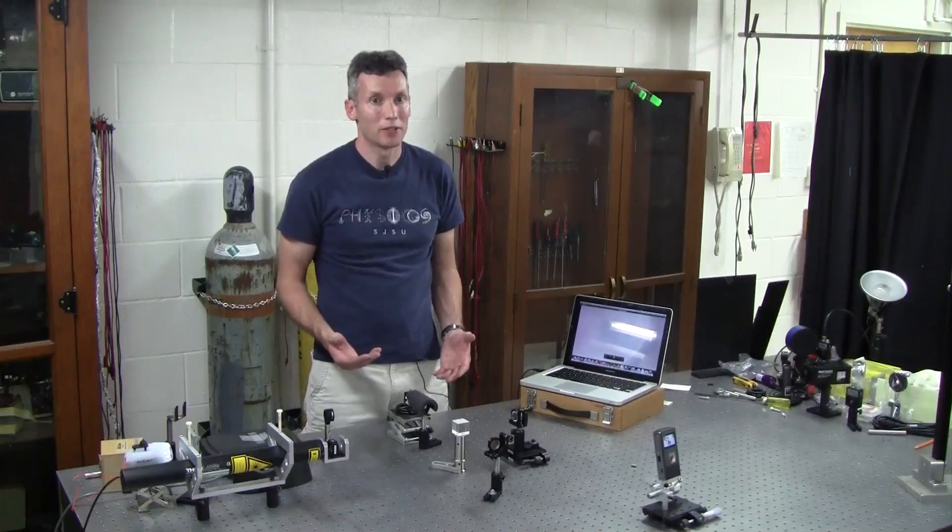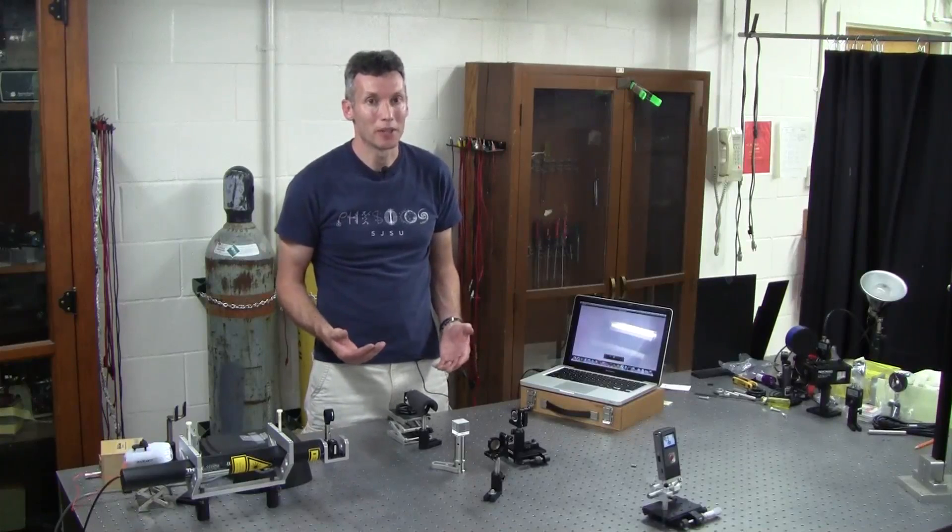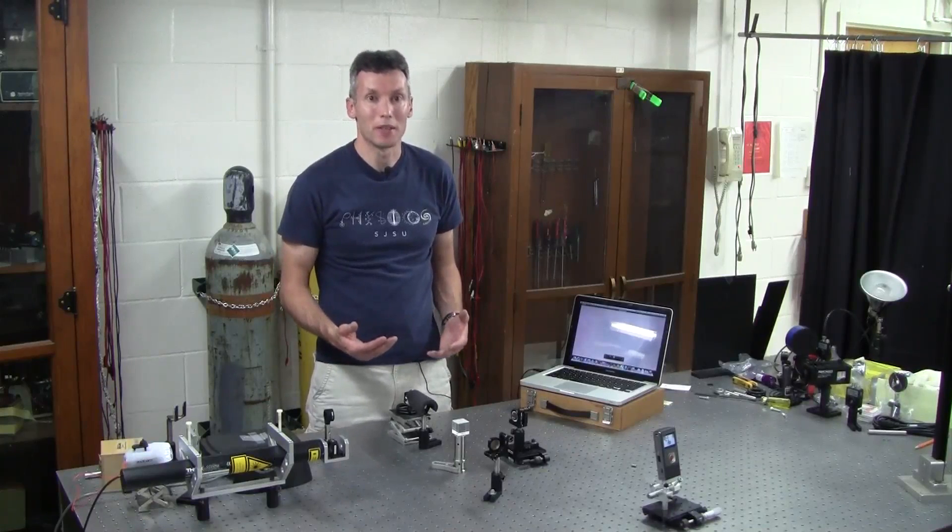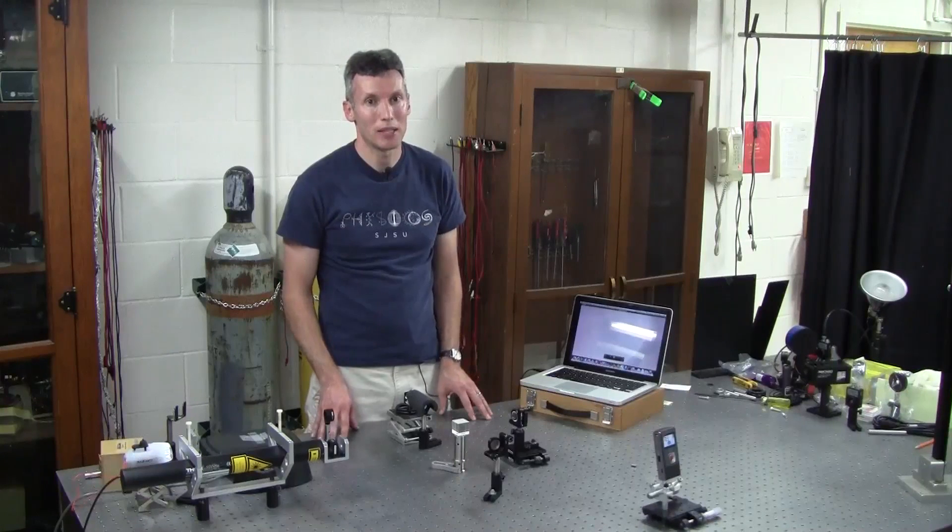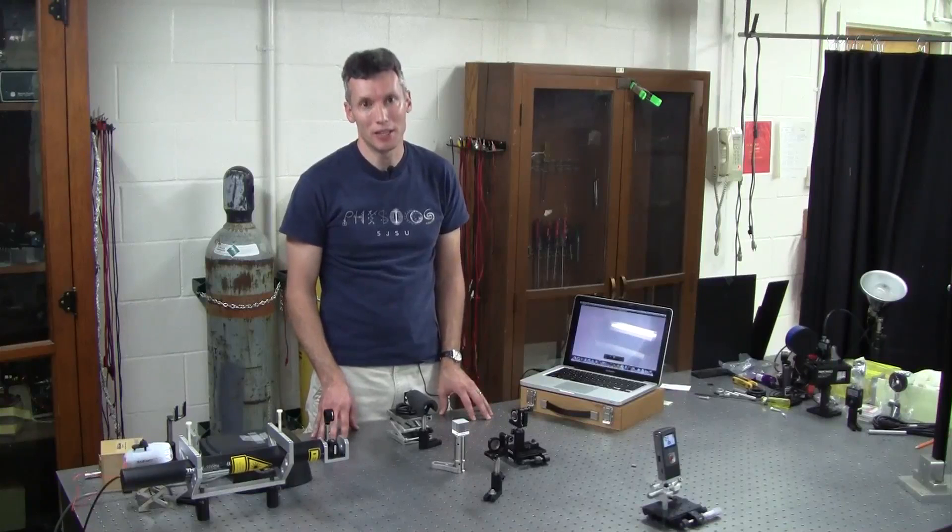In the case of the white light Michelson interferometer, in addition to the alignment of the mirrors, we also have the relative path length difference of the mirrors that needs to be very precisely set in order to even see the interference fringes.